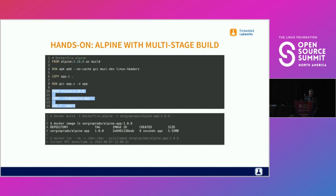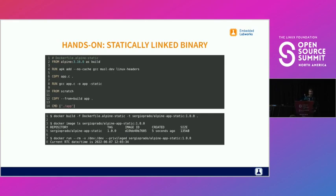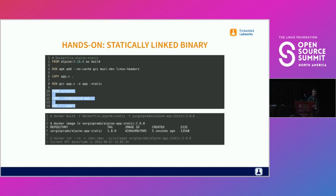The third approach is to statically link the application. Here I'm doing a multi-stage build and building the application statically, then creating a container image from scratch — scratch is an empty image. The result is a container image of only 135 kilobytes. One important note: we're linking against musl, which has a permissive license. If you statically linked with glibc, which is GPL, you might have licensing problems.